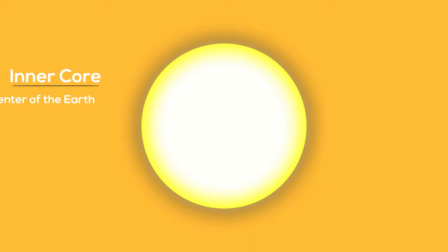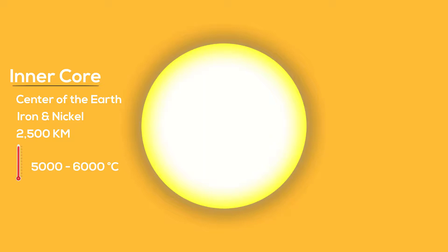The Earth is made of five layers. The inner core is the center of the Earth. It's a huge metal ball of iron and nickel, 2,500 kilometers wide, with a temperature of 5,000 to 6,000 degrees Celsius.